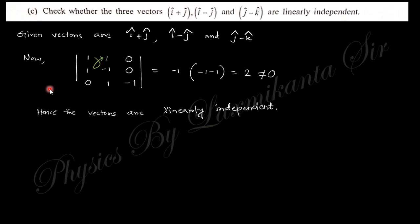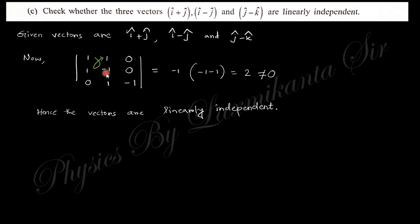The next question says: check whether the three vectors î + ĵ, î − ĵ, and ĵ − k̂ are linearly independent. To find out linear dependence or independence, you evaluate the Wronskian — that is, the determinant of the coefficient matrix of î, ĵ, and k̂. The entries are (1,1,0), (1,−1,1), (0,1,−1). Evaluating this determinant gives −2, which is not equal to zero, so these vectors are linearly independent.